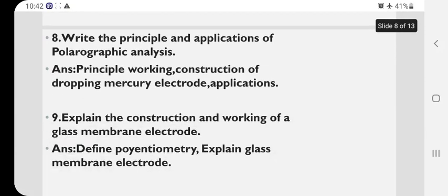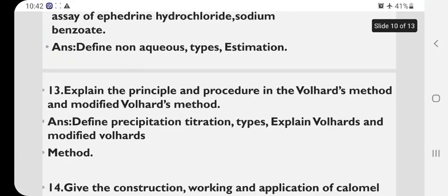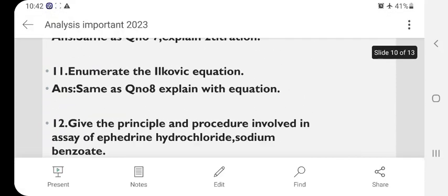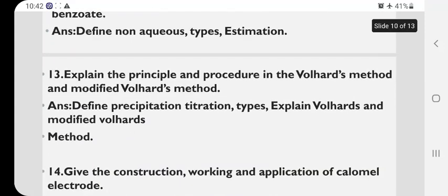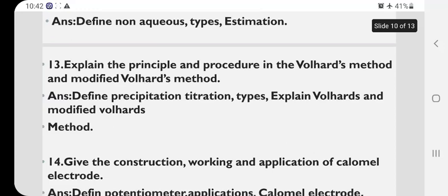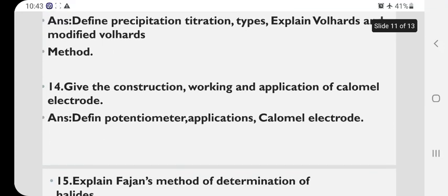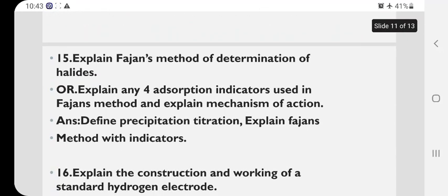You go through this question number 8. See, the same you have to write question number 8. First, you have to expand this Ilkovic. What is this? Then you have to write as it is like question number 8. Give the principle and procedure involved in the assay of ephedrine hydrochloride and sodium benzoate. Explain the principle and procedure in Volhard's method and modified Volhard's method. Then 14th one, construction working and application of the calomel electrode. Very important one. Then explain Fajans method of determination of the halides.